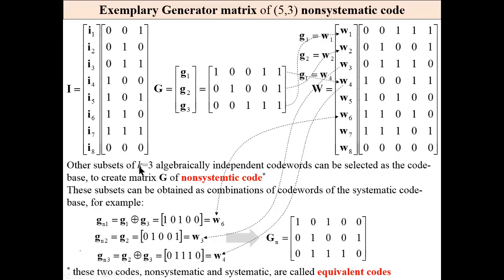Other subsets of K = 3 algebraically independent codewords can be selected, other than this subset, to create a non-systematic code. For example, for this generator matrix of the systematic code, we may add G1 and G3, leave G2 as is, and add G2 and G3, to obtain another code base — a set of algebraically independent codewords. However, this generator matrix is a non-systematic one. These two codes — the systematic one and the non-systematic one — are called equivalent codes.